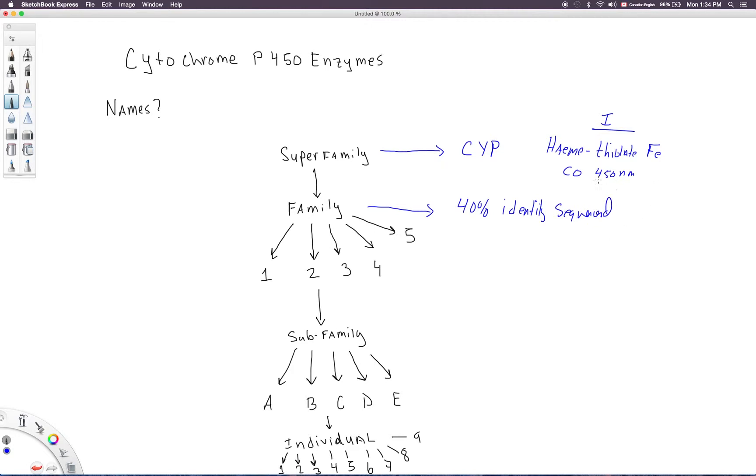So if we have that information, then we can put an Arabic numeral: 1, 2, 3, 4, 5, etc. And then within these families you have subfamilies A, B, C, D, E.